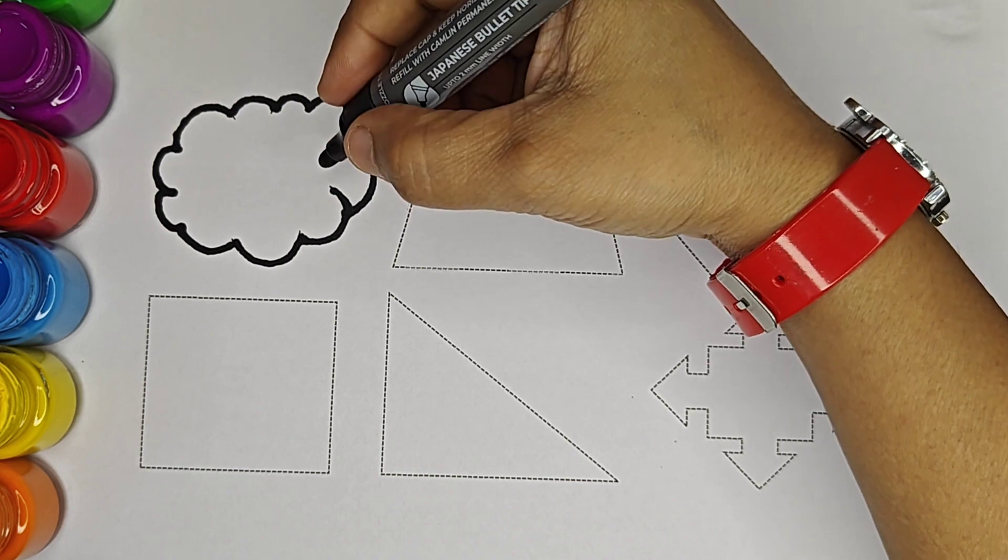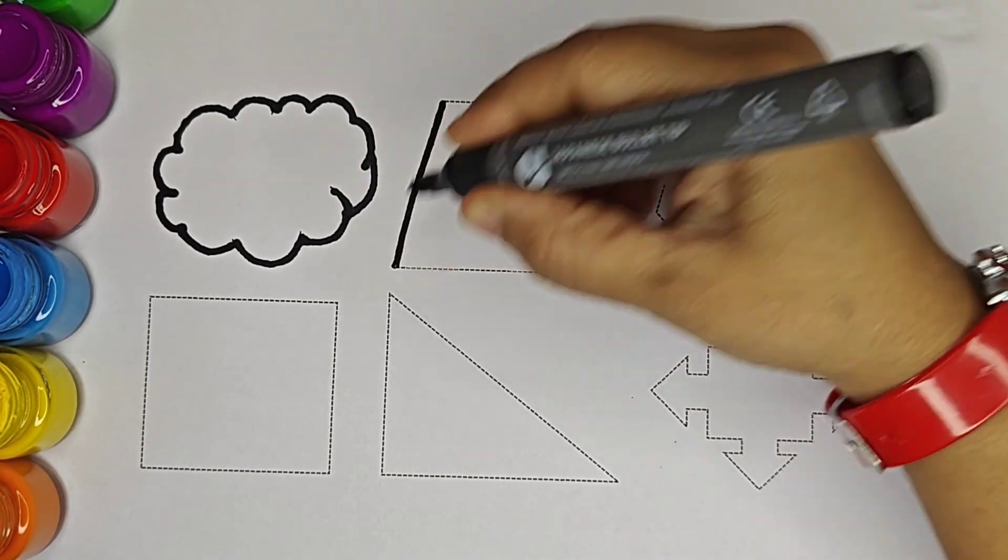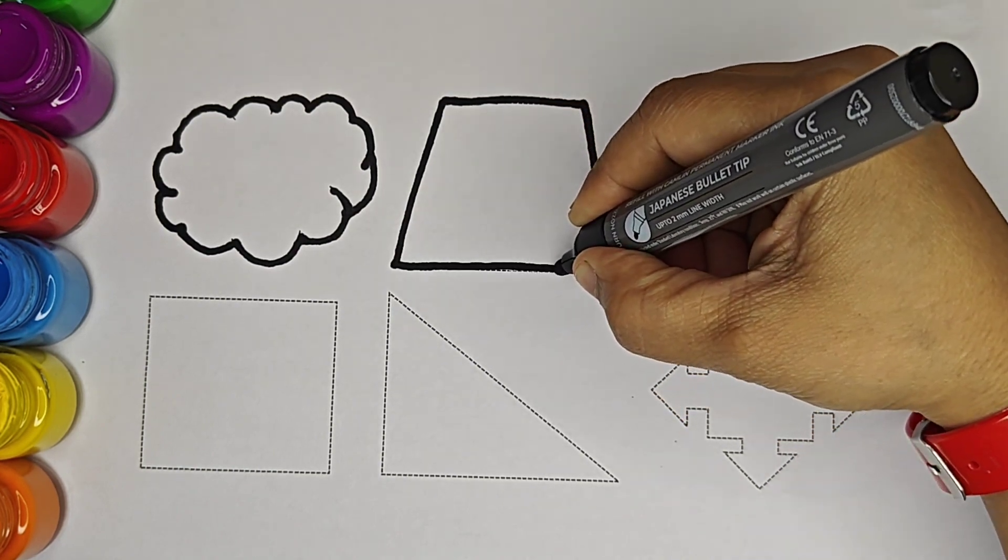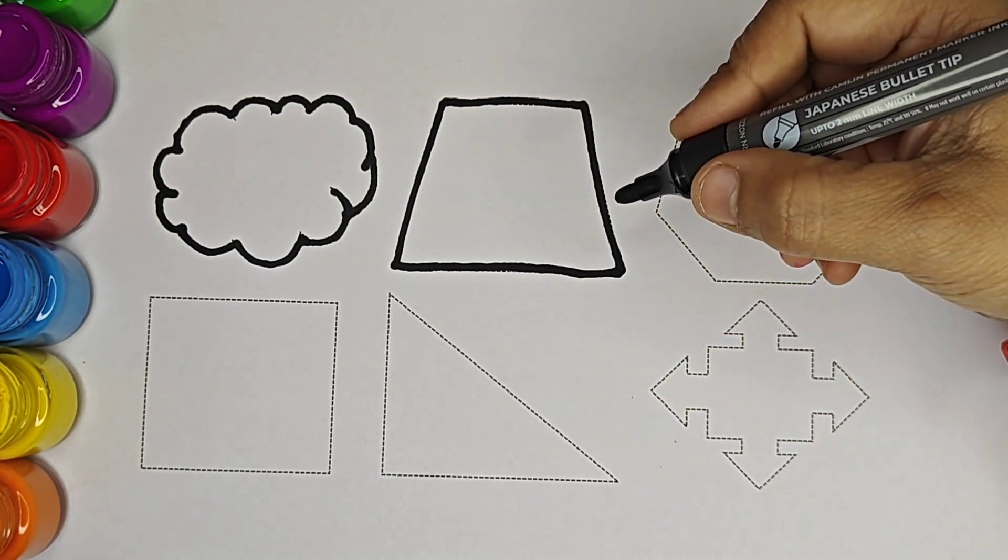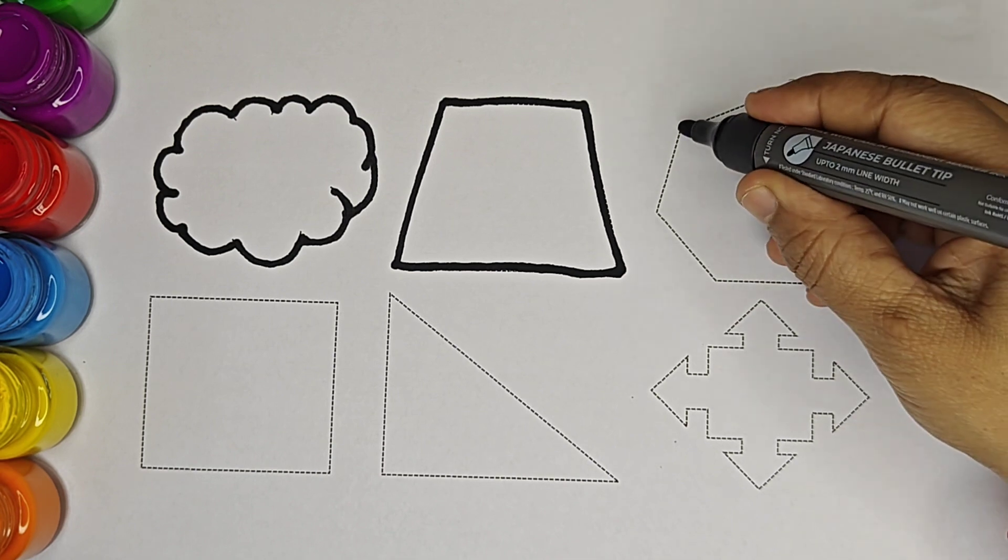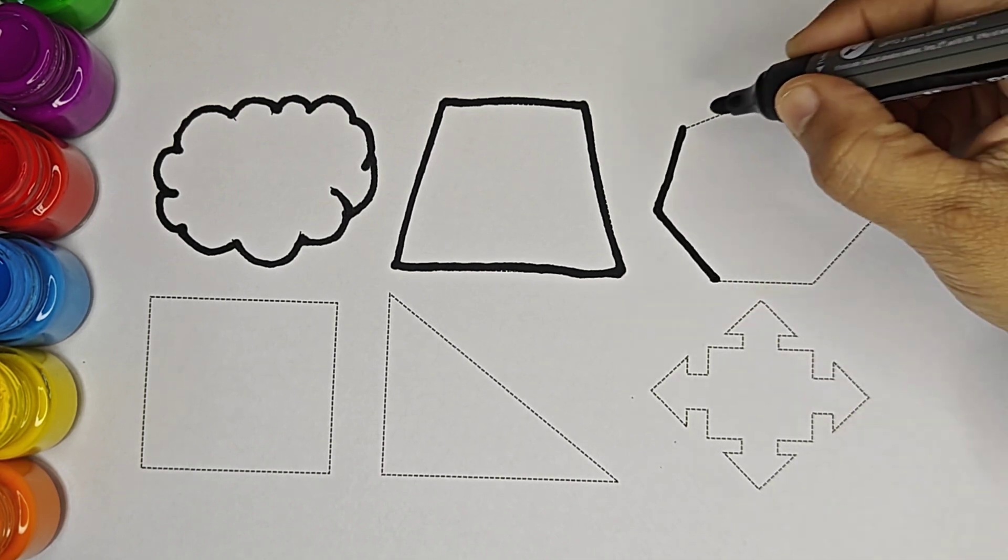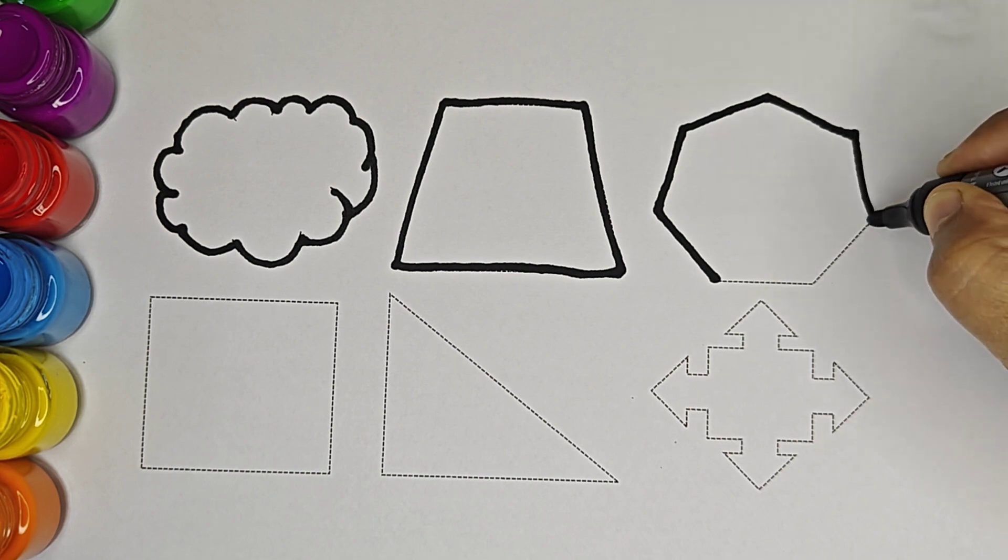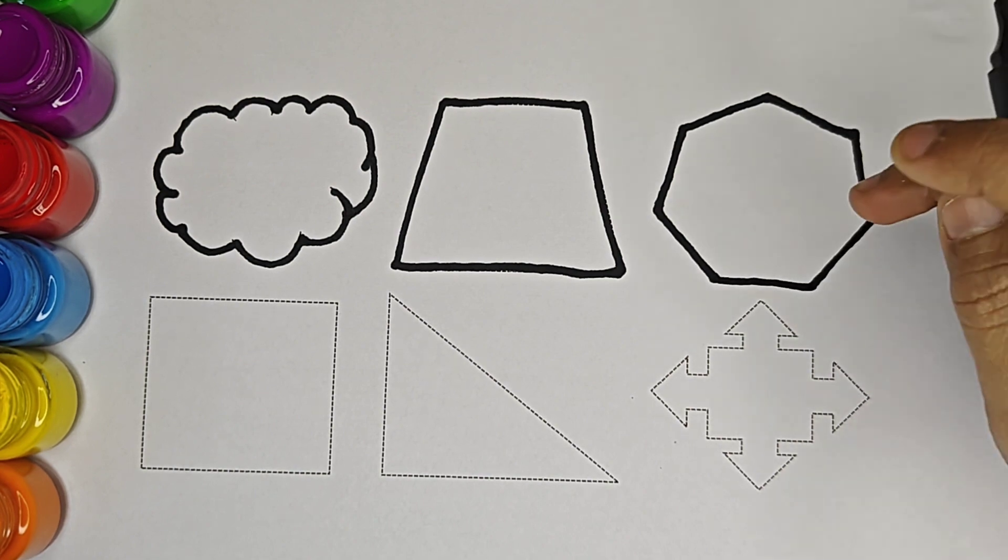This shape is cloud. This is trapezoid. It has four sides. This shape is heptagon.